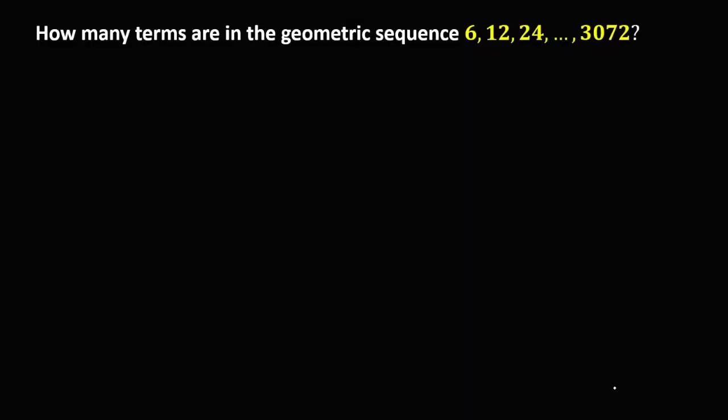Let's solve this problem: How many terms are in the geometric sequence 6, 12, 24, ..., 3072? First, we need to solve for the common ratio r using the formula a₂/a₁, the ratio of two consecutive terms.